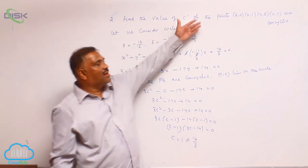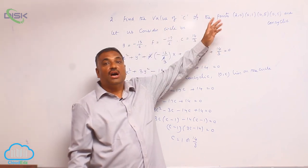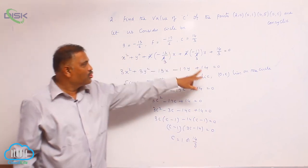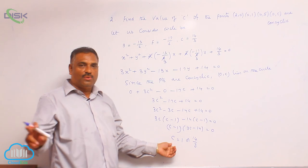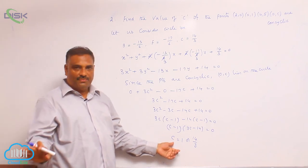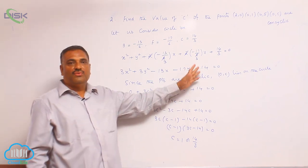When the points are concyclic to find the unknown value c, we substitute the fourth point in the equation of circle. So that we got c equal to 1 or 14 by 3. This is very important problem for board exam.